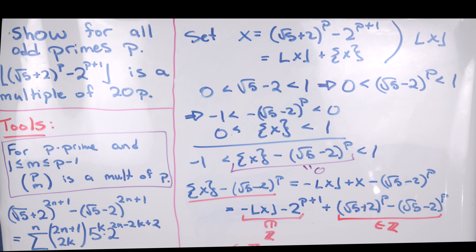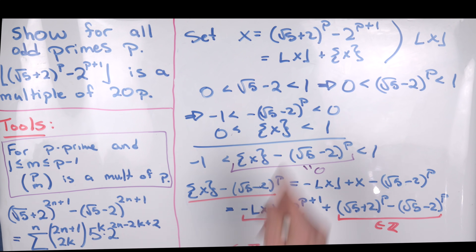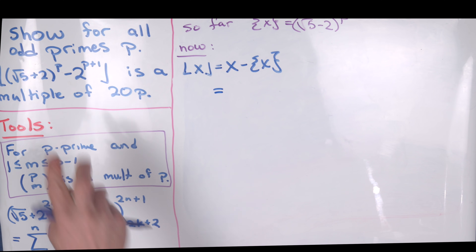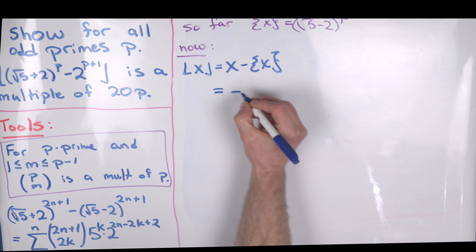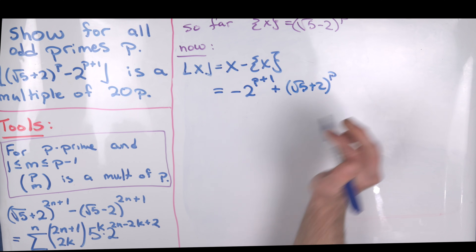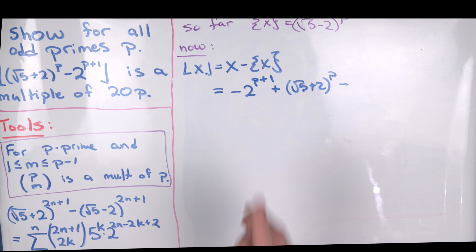Now that we know the fractional part of x equals the square root of 5 minus 2 to the p, we want the floor of x. The floor of x equals x minus the fractional part of x. Expanding using the definition of x and bringing the minus 2 to the p plus 1 out front, we have minus 2 to the p plus 1 plus the square root of 5 plus 2 to the p, and then subtract the fractional part, which is minus the square root of 5 minus 2 to the p.